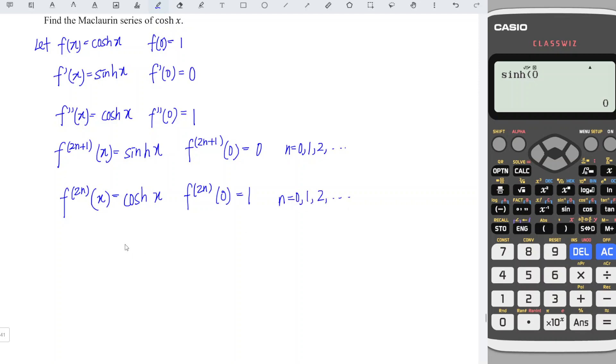And hence, we can build our Maclaurin series. Cosh x should use only even numbers.